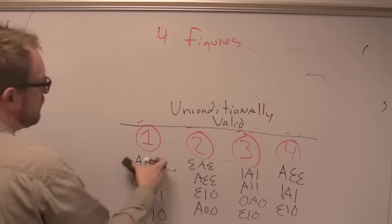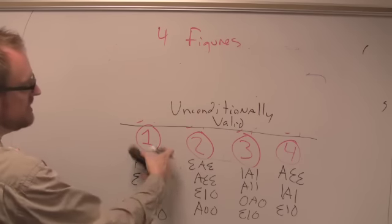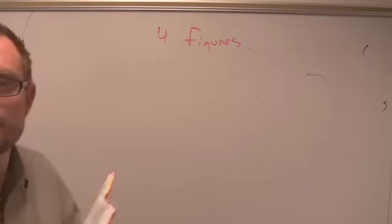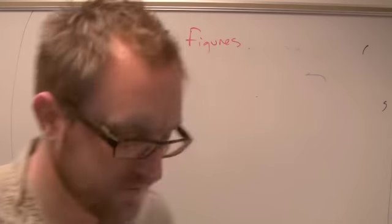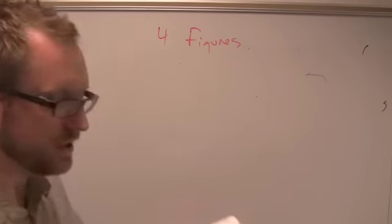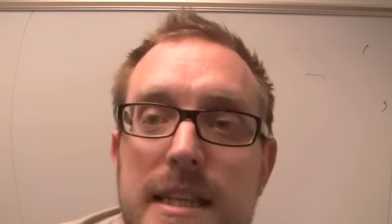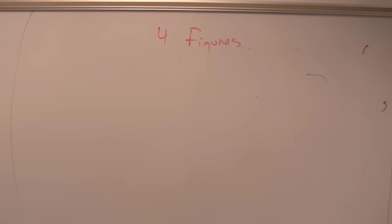The conditionally valid forms — there are more of them — can be found on page 247. You'll appreciate this from learning the difference between the existential fallacy and the Boolean versus Aristotelian discussion.